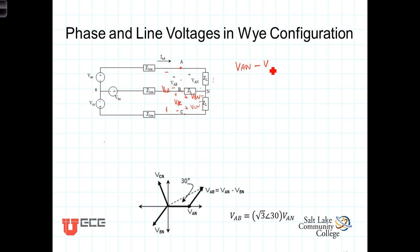VBN, and then, from here to here, we're going across from B to A, which is going from the negative to the positive terminal of VAB. So, that would be minus VAB,